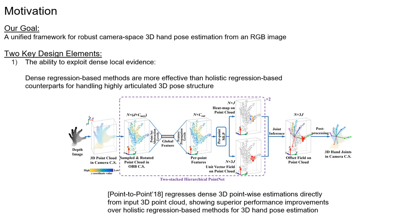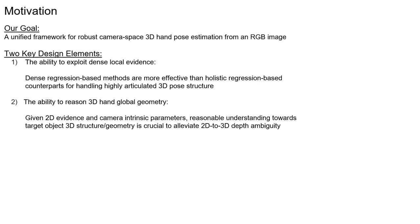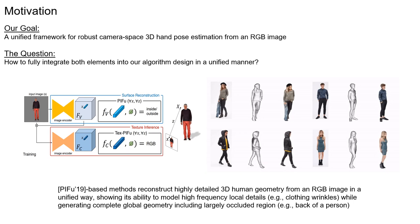To recover robust camera space 3D hand pose, there are two key design elements. First is the ability to exploit dense local evidence. Dense regression-based methods are more effective than holistic regression-based counterparts for handling highly articulated 3D pose structure, attributed to their ability to maintain the input data spatial structure and fully exploit local evidence. Second is the ability to reason about 3D hand global geometry. Given 2D evidence and camera intrinsic parameters, reasonable understanding of the target object's 3D structure is crucial to alleviate 2D to 3D depth ambiguity, which is the key to accurately locating 3D hand pose in camera space.